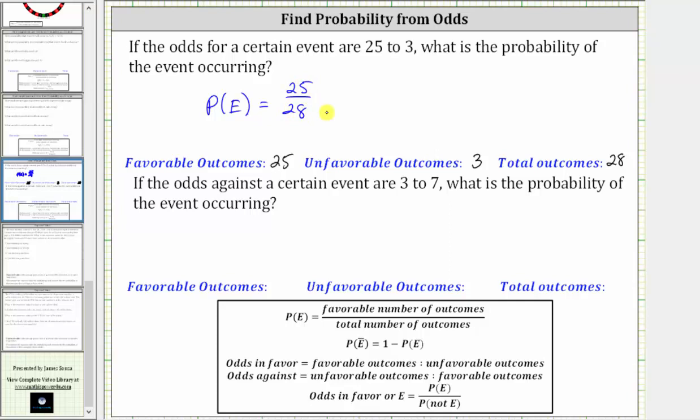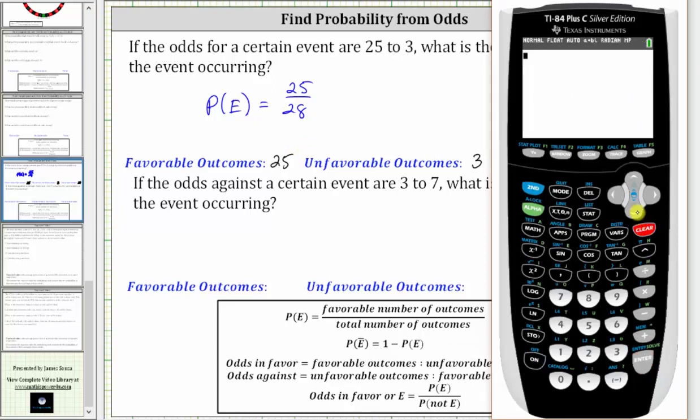This fraction doesn't simplify, but let's also express this as a decimal and a percentage. To convert to a decimal, we divide 25 by 28, which to four decimal places would be 0.8929.